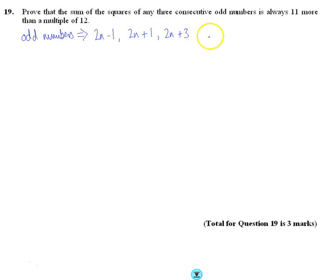The one after that will be 2n plus 5 and so on. You don't have to start with minus 1, you could just start with 2n plus 1, but just any three consecutive, they're the ones I've chosen. So I've done three consecutive odd numbers.